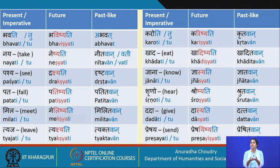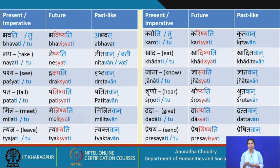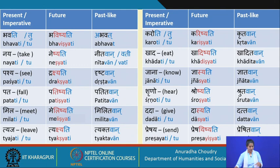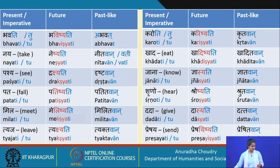The verb nayati or nayatu means 'to take' and takes an object in the accusative. Kim nayatu? Chashakam nayatu — please take the glass. Chamasam nayatu. Pashyati we have seen in various phases: kim pashyatu — pushpam pashyatu — see the flower. Patati means 'to fall' and is an intransitive verb that does not take an object, so it keeps the subject case: chashakaha patati — the glass falls.